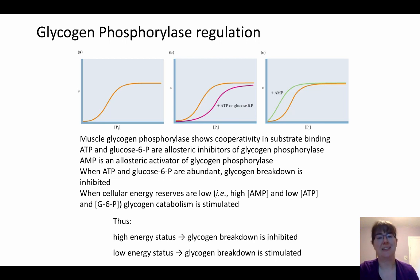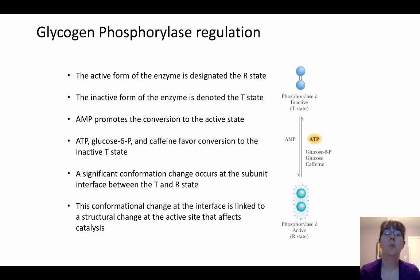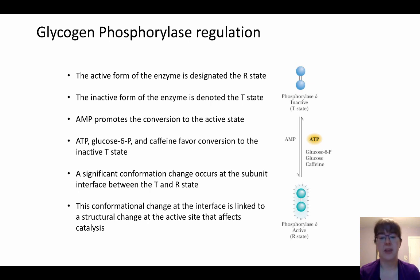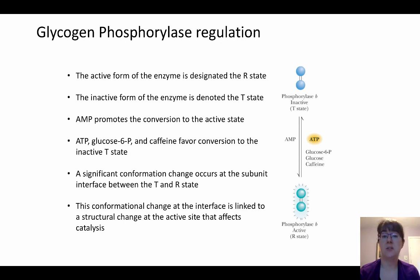AMP is an allosteric activator — being the low energy signal, it's going to activate glycogen phosphorylase. When talking about this regulation, we go back to the MWC model, because we can discuss the T and R forms. There is the T form, the less active form, as well as a more active R form. AMP promotes conversion to the more active R form, all through allosteric regulation.